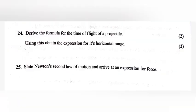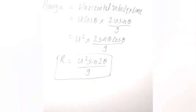Part b: Using this, obtain the expression for horizontal range. Range = horizontal velocity × time = u·cosθ × (2u·sinθ / g) = u² × 2·sinθ·cosθ / g = u²·sin2θ / g.